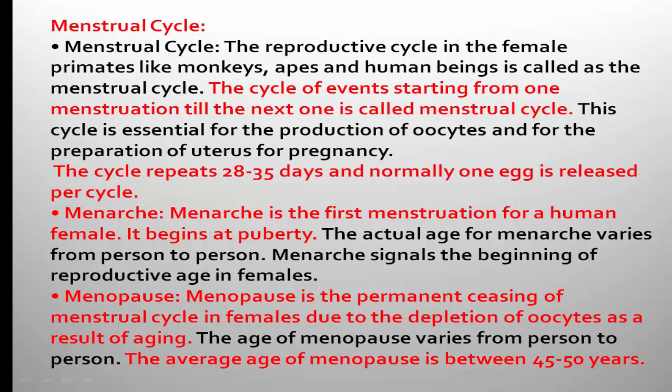The definition of menstrual cycle: the cycle of events starting from one menstruation till the next one is called the menstrual cycle. This cycle is essential for the production of oocytes — that means the conversion of primary follicle to secondary, secondary to tertiary, and so on — and for the preparation of the uterus for the purpose of pregnancy.